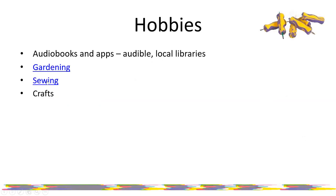There are also links for specialist hobby and craft tools — for example, gardening, sewing, or crafts. If you're interested in photography, searching for 'photography, accessibility, disability' on Google will find specialist groups with loads of advice — things like camera tripods and cameras with bigger buttons to help hold steady. Even if you think your need is very niche, there's usually somebody else who has had the same challenges and found a way to overcome them.